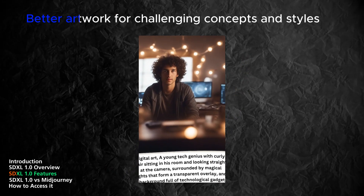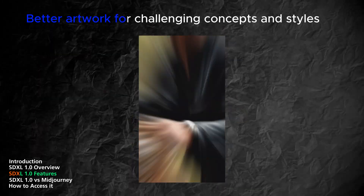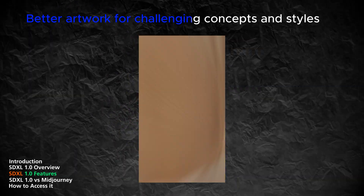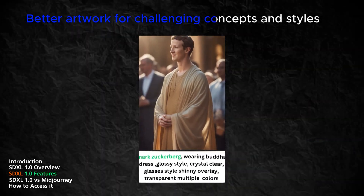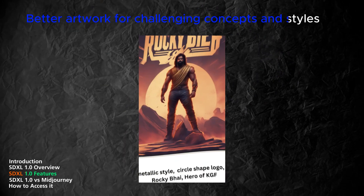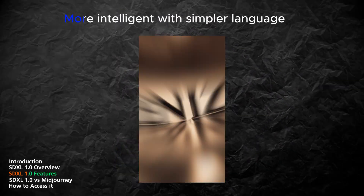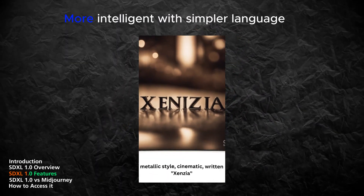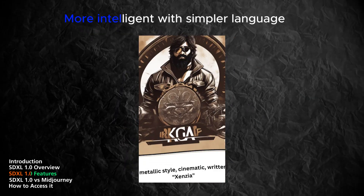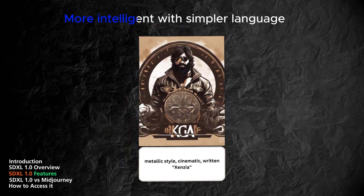Some of the features that make SDXL stand out: SDXL can generate images that are realistic, artistic, or abstract depending on the text prompt. It can also handle difficult concepts such as hands, text, or spatial arrangements, which are often problematic for other models. SDXL 1.0 can understand the meaning and context of the text prompt and generate images that match the intention of the user.